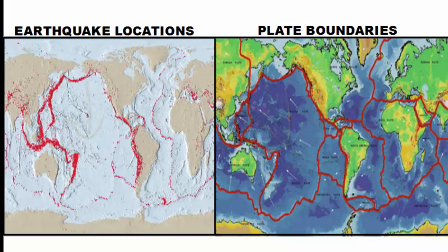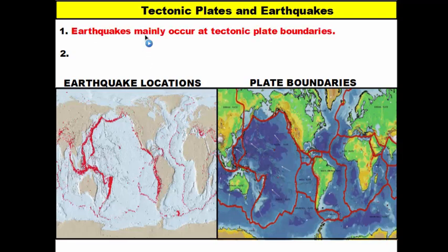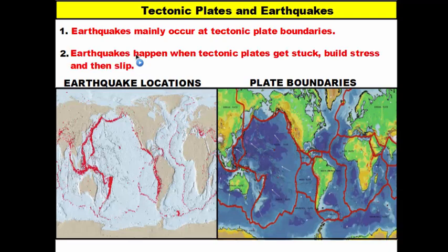There's no coincidence behind that. The reason why earthquake locations draw out our tectonic plates is because earthquakes mainly occur at or near tectonic plate boundaries. As we learned in the theory of tectonic plates, our lithospheric tectonic plates float and move on the asthenosphere, and because these plates move around, they tend to get stuck, the rocks build up stress, and then slip.